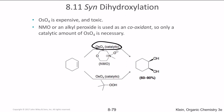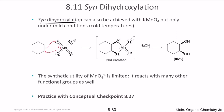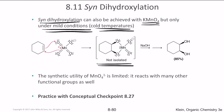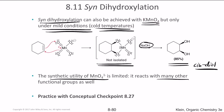OsO4 is expensive and toxic due to the heavy metal osmium, so NMO or an alkyl peroxide can be used as a co-oxidant to reduce the amount of OsO4 needed. Syn-dihydroxylation can also be achieved with potassium permanganate under mild cold conditions. However, the intermediate cannot be isolated; oxidation in the presence of NaOH gives the final syn-diol. In anti-dihydroxylation you get a trans-diol; here you get a cis-diol. Note that the utility of potassium permanganate is limited because it reacts with many other functional groups.